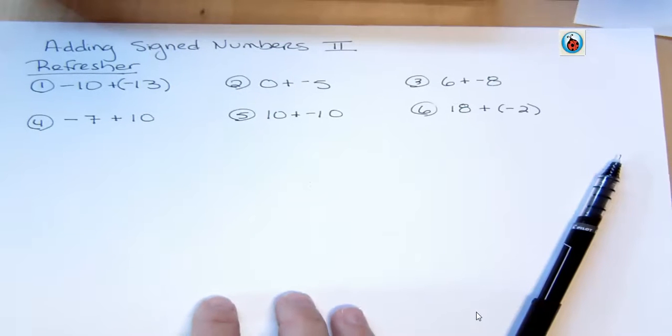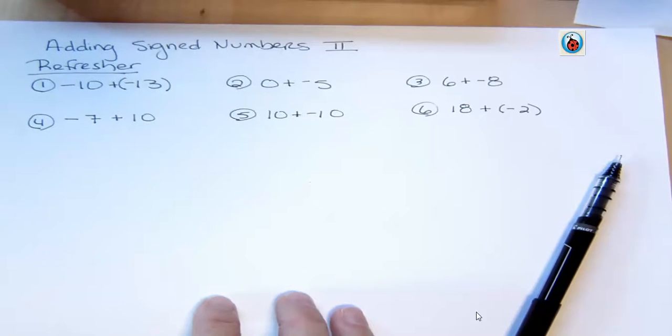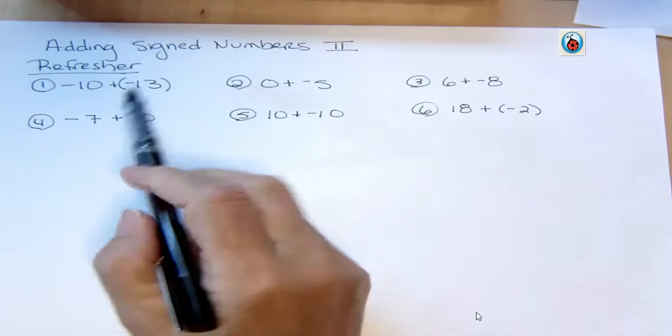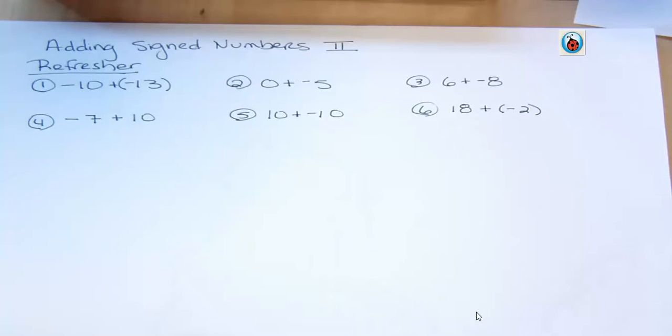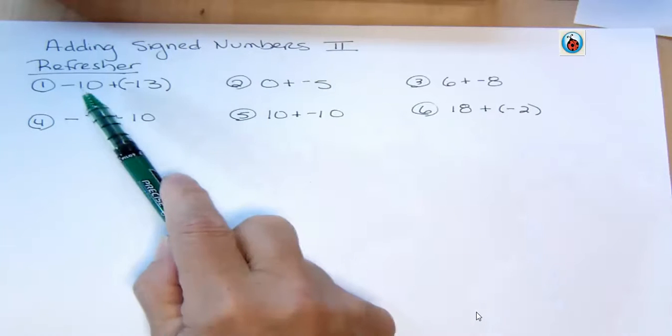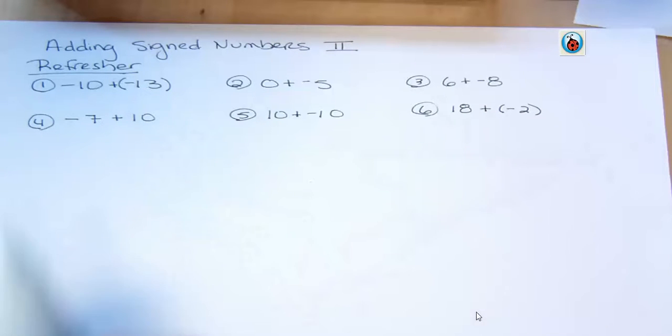Hi, I'm Carly McEvoy. This is Adding Signed Numbers, second lecture on this. So the quick refresher from the first lecture is when we add two numbers together that have the same sign, we just add the numbers. We don't have to worry about canceling out because they both have the same sign.